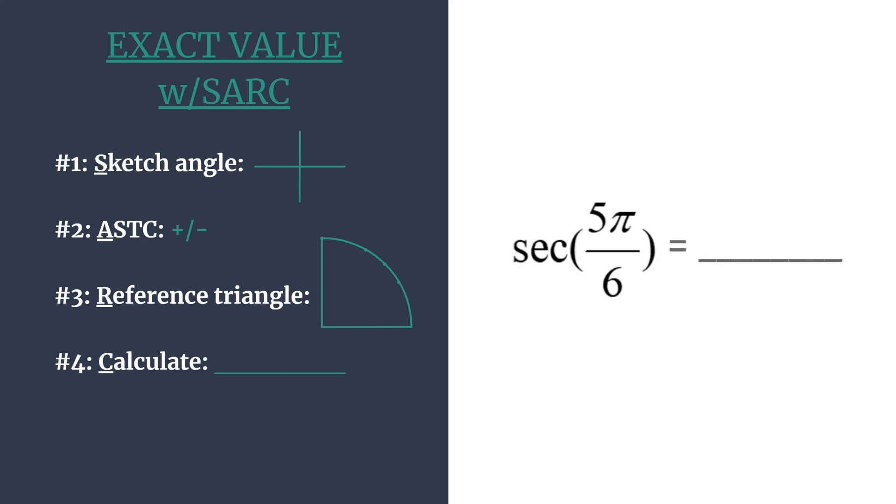So we'll do this today for the secant of 5π over 6. Getting started, S, we'll sketch our angle. We're going to sketch the terminal side, like I mentioned before. Looking at our angle, we should notice two things. First, that it's positive, so we know we're rotating in the counterclockwise direction. And second, we should notice that it's less than one rotation.